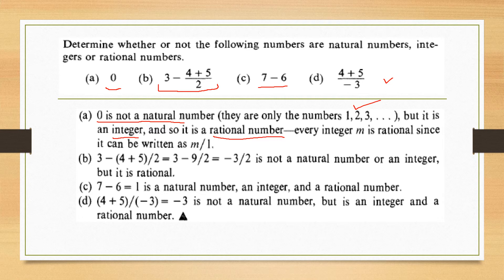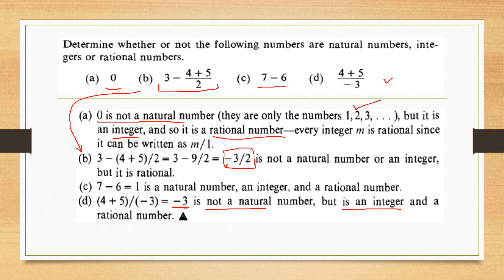For part B, after simplifying we obtain minus 3/2 as a result. It is not a natural number or an integer, but it is a rational number. For part C, 7 minus 6 equals 1, which is a natural number, an integer, and also a rational number. For part D, we obtain minus 3, which is not a natural number but it is an integer and also a rational number.